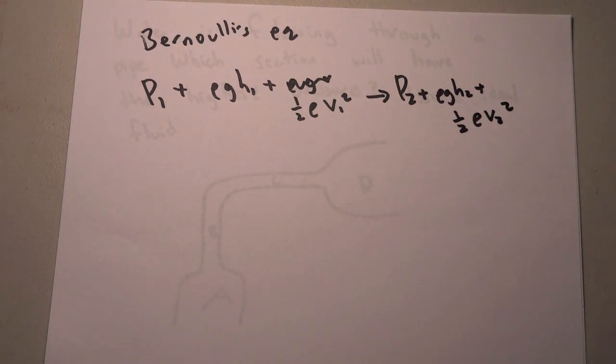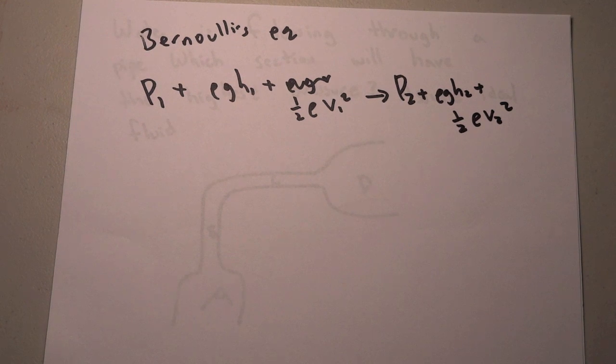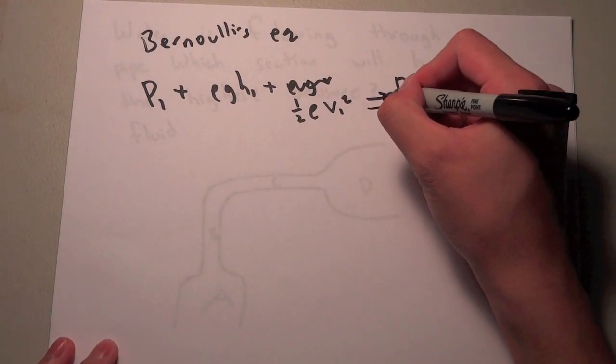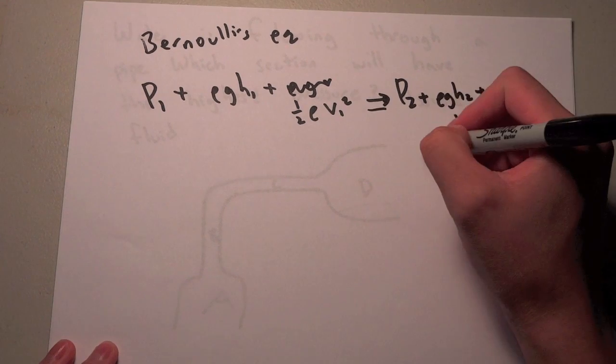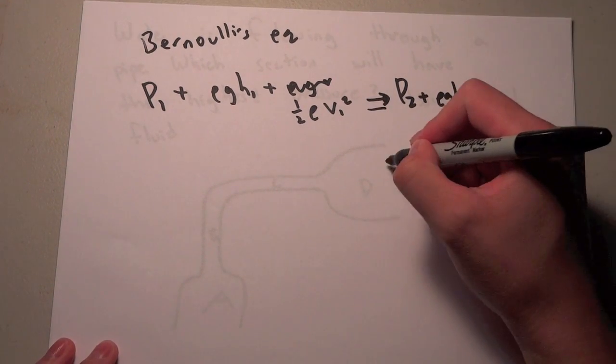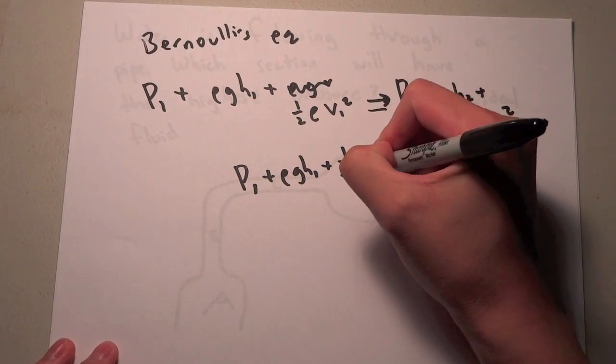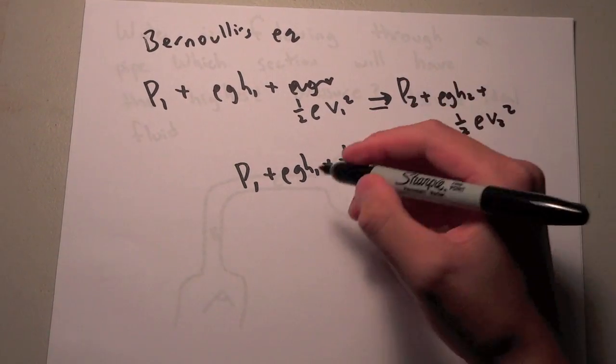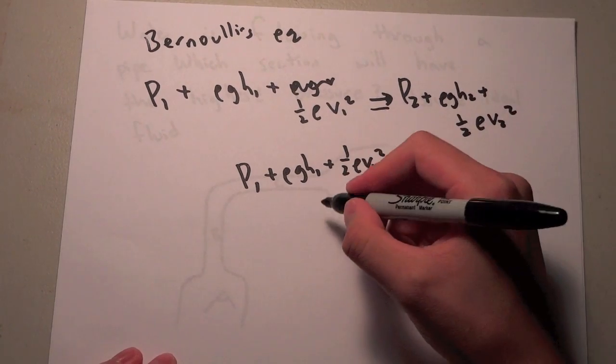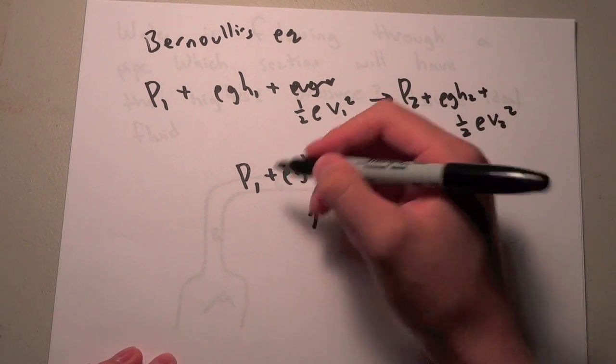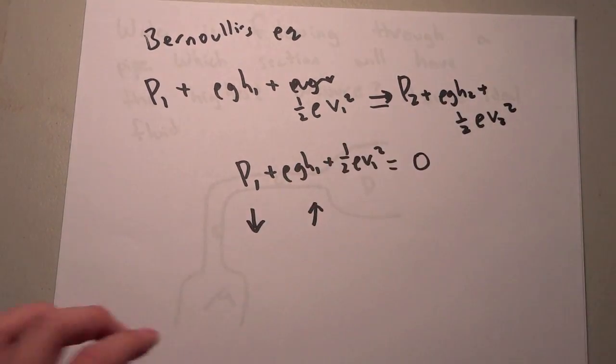So the way we want to solve this is we want to see what the effects of height and velocity are on pressure. So what I'd like to do is you set one side to zero. You just set it as a reference. And we always want this to be zero. So if we increase the height, what would have to happen to the pressure in order to keep this constant? We would have to lower the pressure.